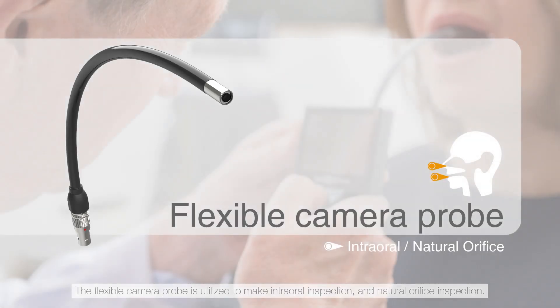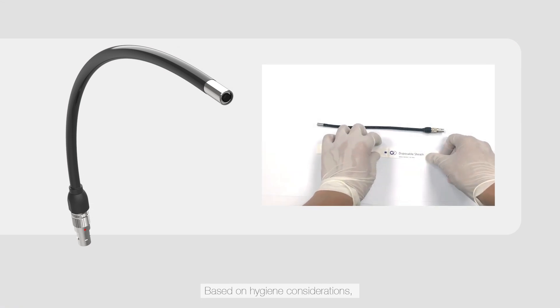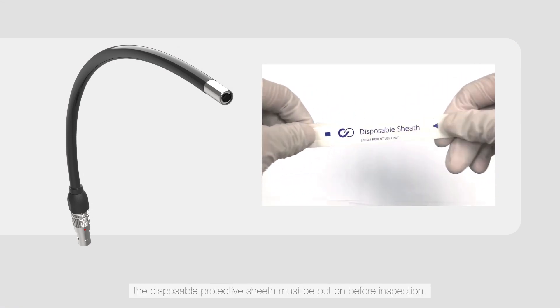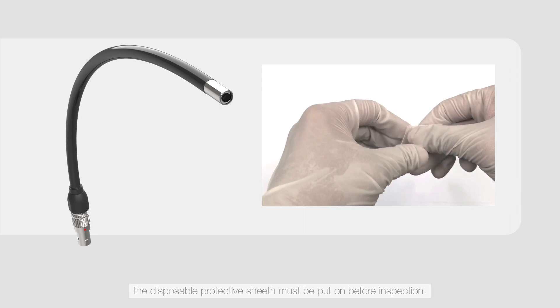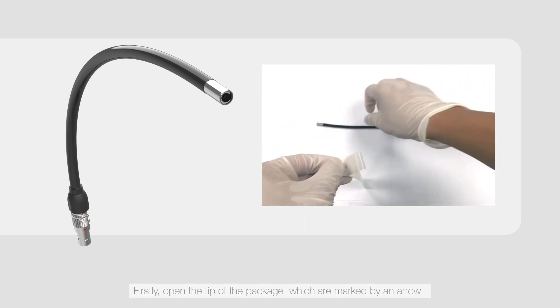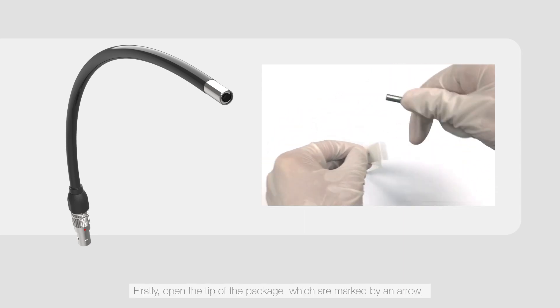The flexible camera probe is utilized to make intraoral inspection and natural orifice inspection. Based on hygiene considerations, the disposable protective sheath must be put on before inspection. Firstly, open the tip of the package which is marked by an arrow, and an opening of the sheath will be exposed.